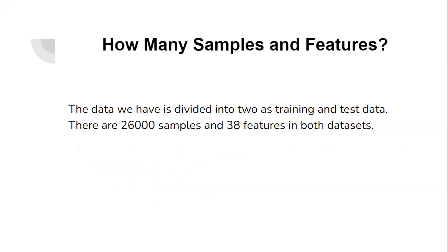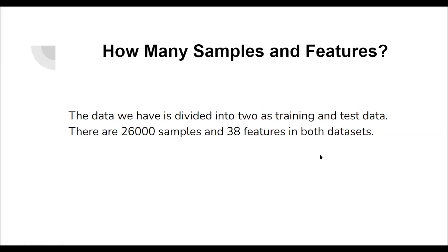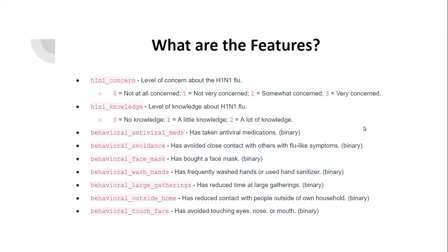From now on, MetaN1 will continue with the samples and features. I am MetaN1 Uzun. I will tell you about the details of the data that we have. We have two types of datasets: the first one is a train dataset and the second one is a test dataset. There are 26,000 samples and 38 features in both datasets. In the next few slides, we will see the names of the features and what kind of values they have.